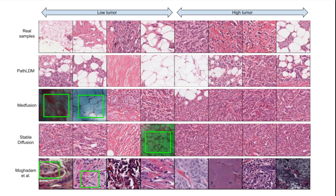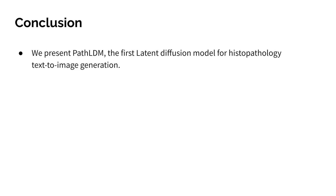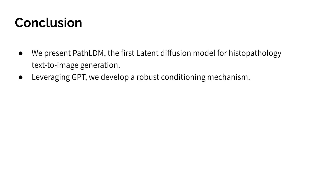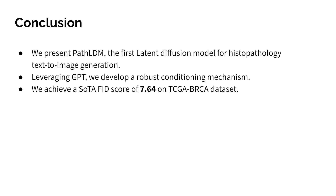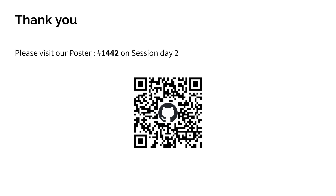In conclusion, we present PATH-LDM, the first latent diffusion model for generating histopathology images conditioned on text. By effectively summarizing complex pathology text reports using GPT, we establish a robust conditioning mechanism that bridges the gap between textual and visual content. Our strategic conditioning coupled with architectural enhancements led to a state-of-the-art FID score of 7.64 on the TCGA-BRCA dataset. We anticipate that our work will encourage future exploration of domain-specific pathology diffusion models. Thank you for your attention; please visit our poster on poster session day 2, and our code and trained models can be obtained by scanning the QR code.